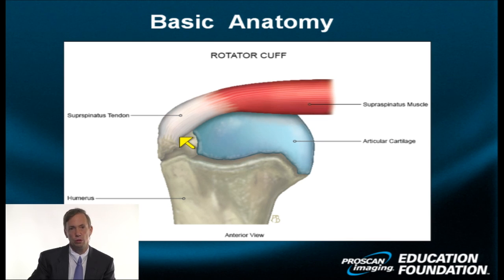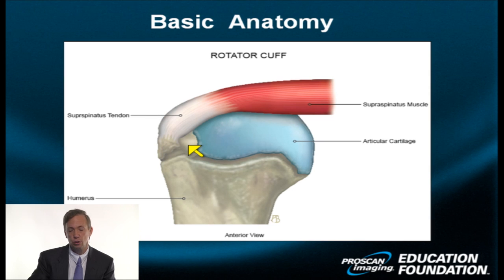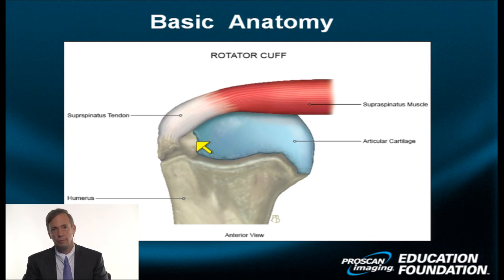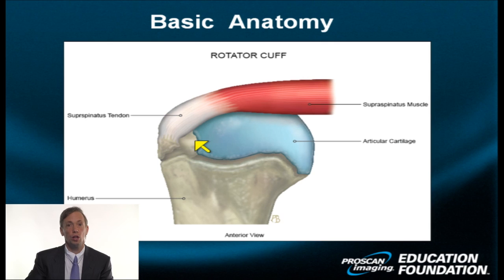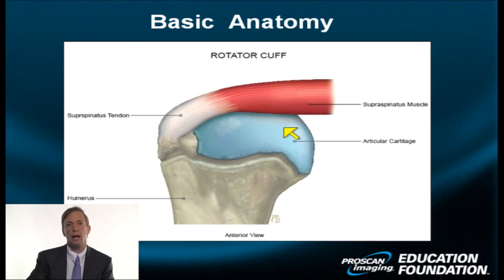Beneath the tendon and medial to the footplate or footprint is an area of the humeral head that is intra-articular but devoid of hyaline cartilage. This area, which I'm outlining for you now, is known as the bare area. The bare area enlarges as you get a little older. The rest of the humeral head is covered by hyaline cartilage, seen here in aquamarine blue.